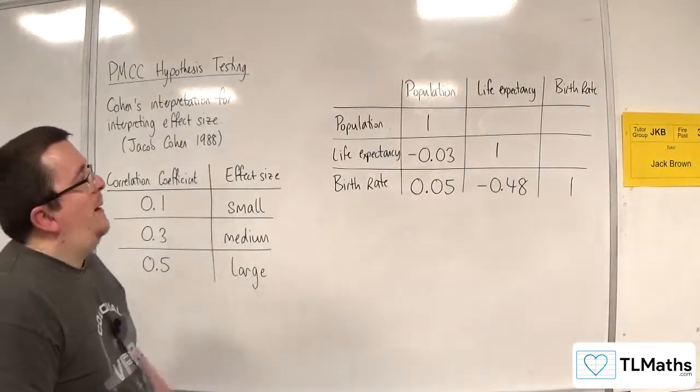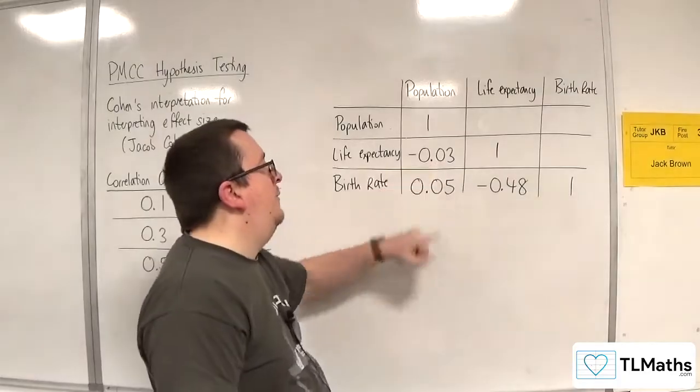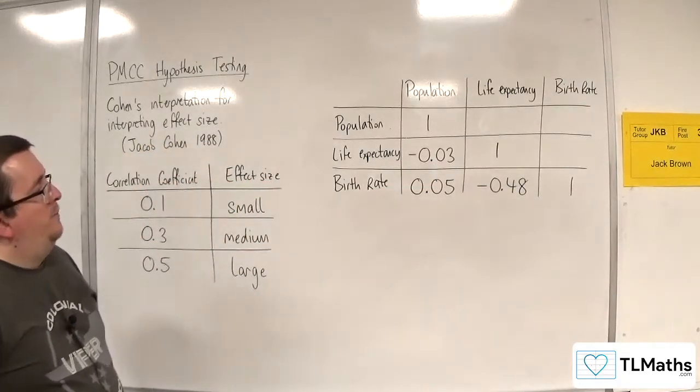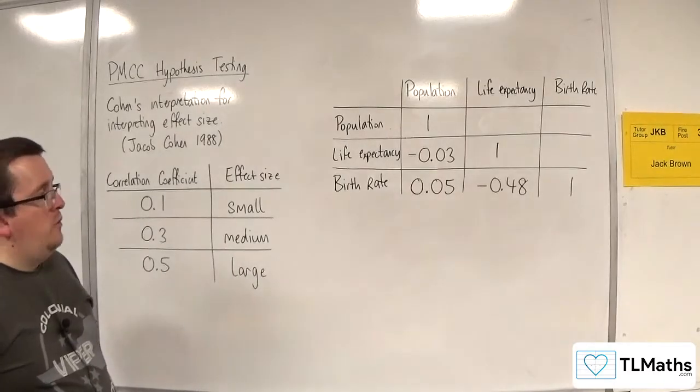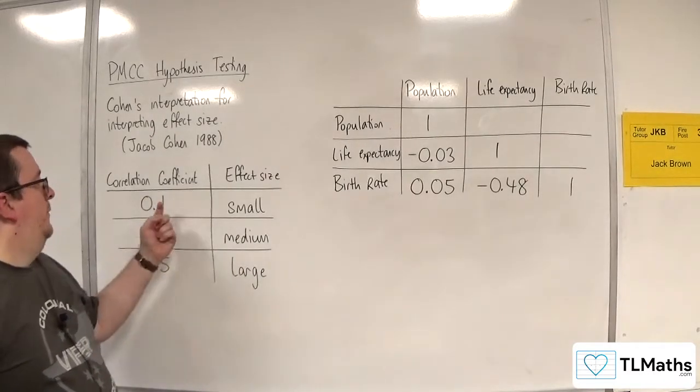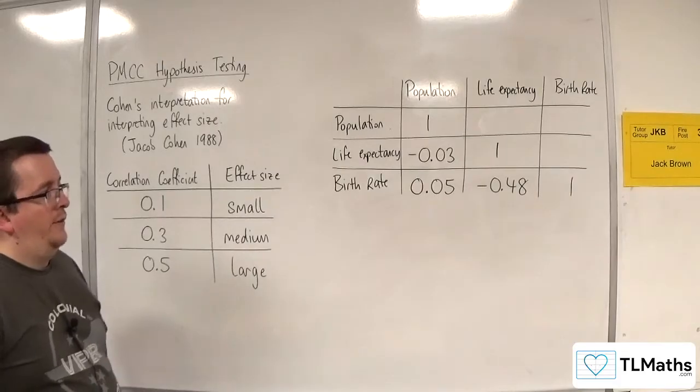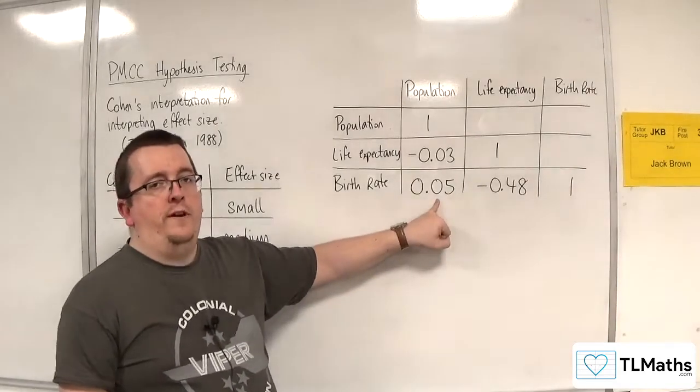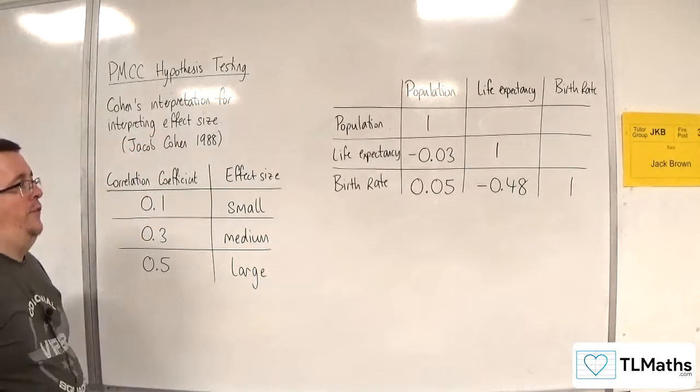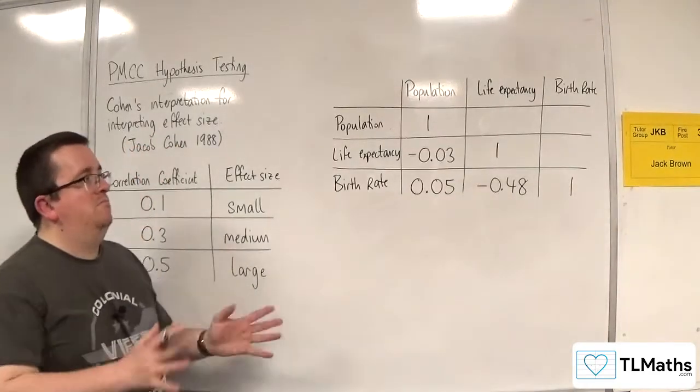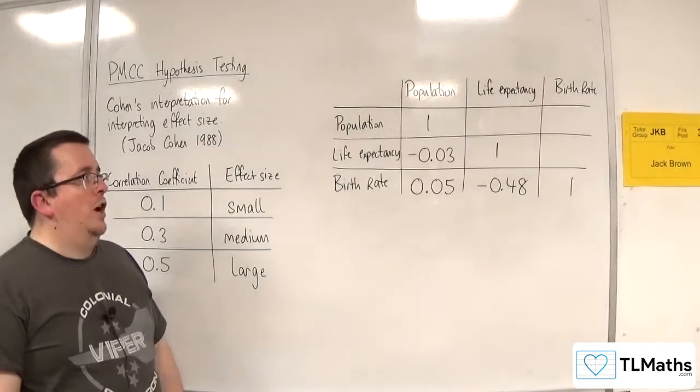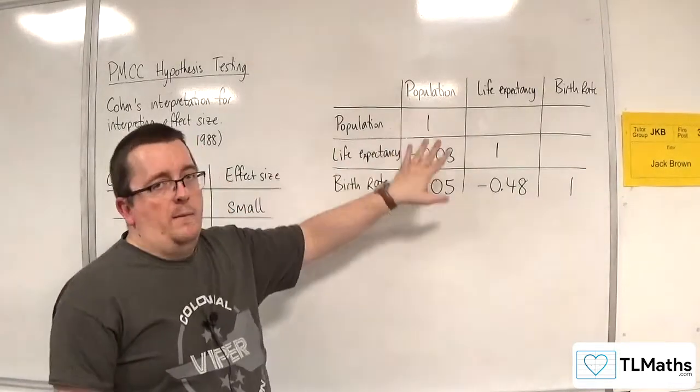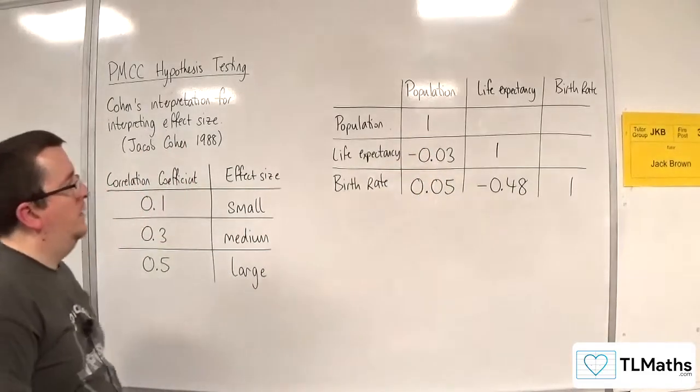We've got a life expectancy against population, the PMCC was calculated to be minus 0.03. Now that is quite close to 0 and hence is a very small effect size. And in a similar way, so is the 0.05. So that means that you can pretty much be clear that there's very little correlation between life expectancy and population and birth rate and population.